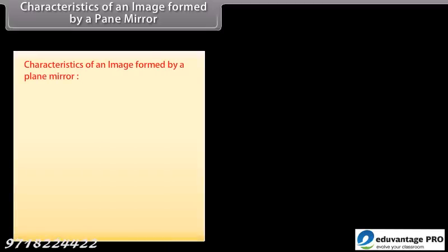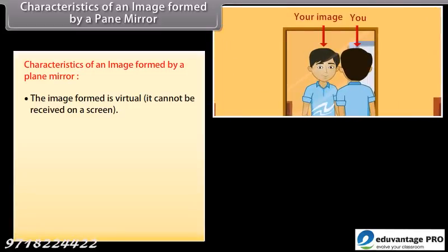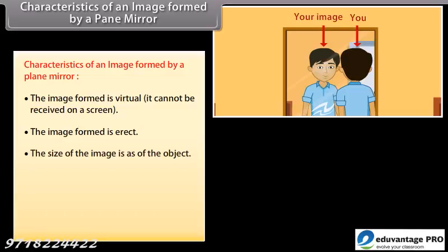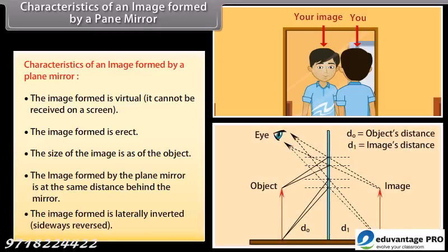Characteristics of an image formed by a plane mirror. The image formed is virtual; it cannot be received on a screen. The image formed is erect. The size of the image is as of the object. The image formed by the plane mirror is at the same distance behind the mirror. The image formed is laterally inverted, sideways reversed.